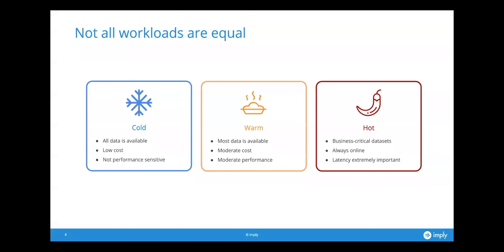Some data sets are going to be warmer. Most data is available — not all, but most. Moderate cost, moderate performance. This is your balance system where you're not necessarily striving for true real-time performance, but you have more idea of what you want to do with it, more ability to justify paying a bit more money, and you might even be dedicating some compute resources.